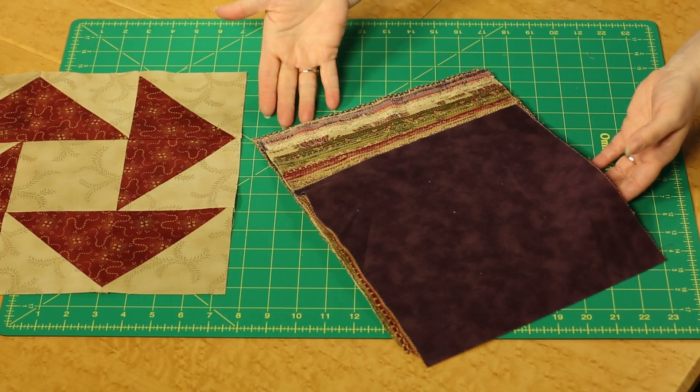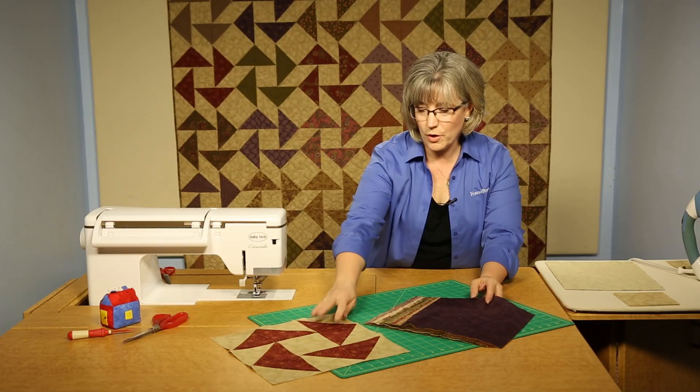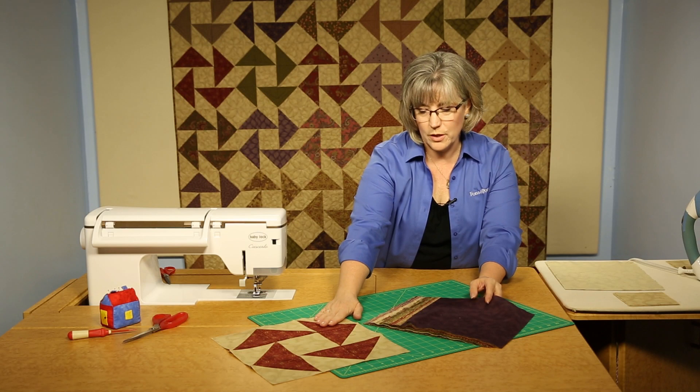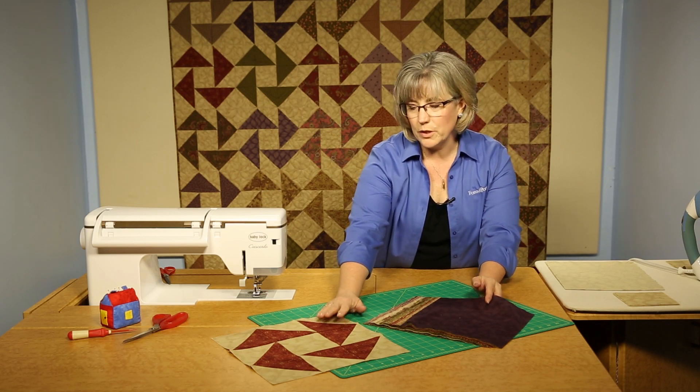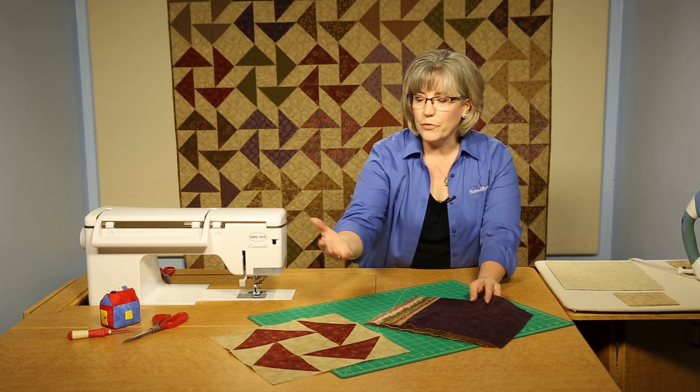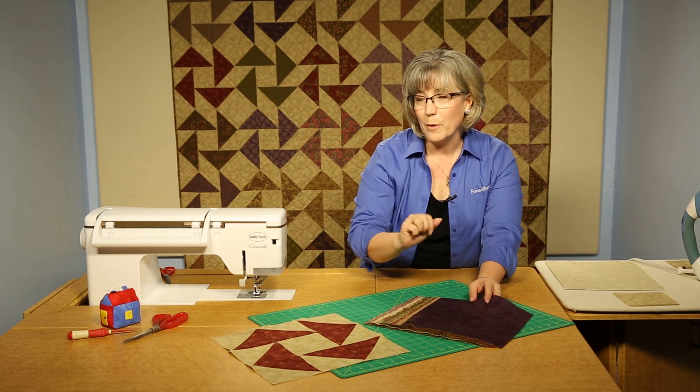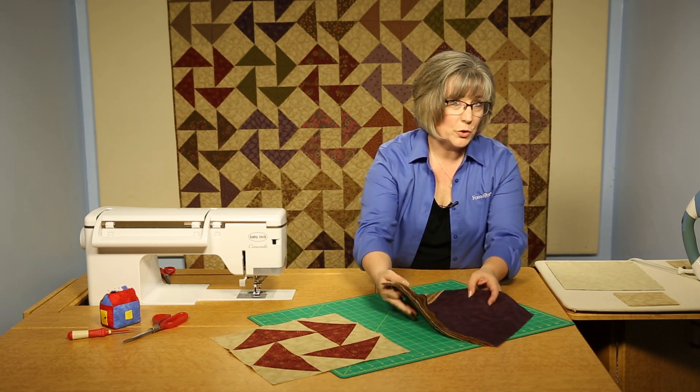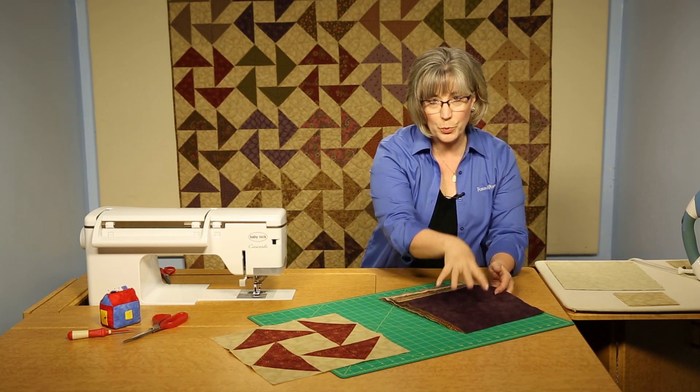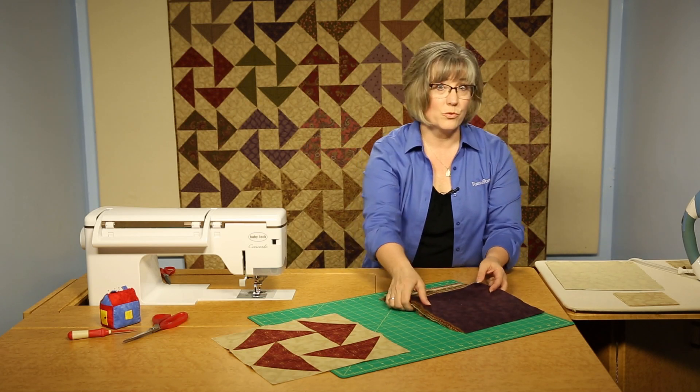Now we're going to be working on creating these triangle squares that go into this quilt. Some people look and say they look like flying geese, well they are flying geese, but they are made up of triangle squares. And I'll show you how to work with the 10-inch pre-cuts to create these really efficiently.